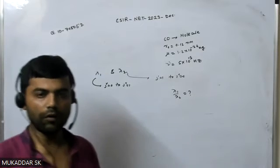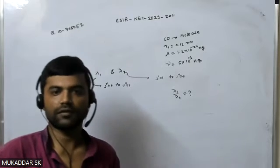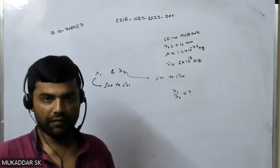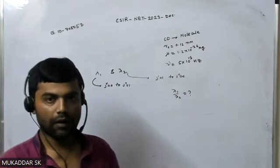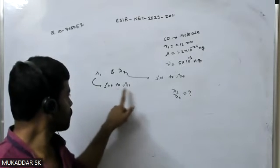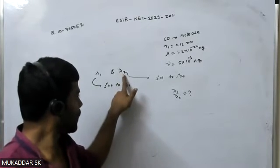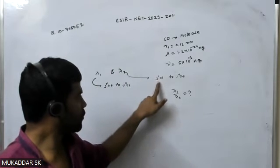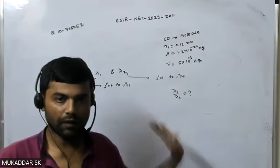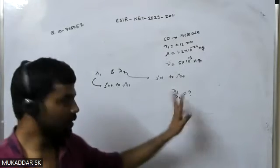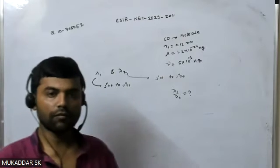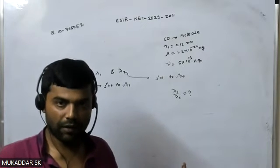So you have a CO molecule performing rotational-vibrational spectra. The transition between adjacent vibrational levels has wavelengths λ1 and λ2 corresponding to rotational transitions j'=0 to j''=1 and j'=1 to j''=0 respectively. The given parameters are bond length, reduced mass, and vibrational frequency. It is mentioned there is no coupling between the rotational and vibrational spectra.